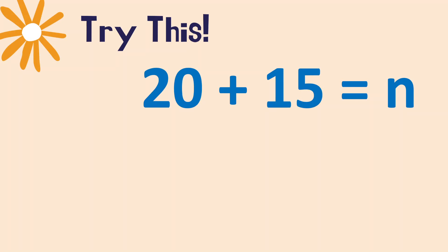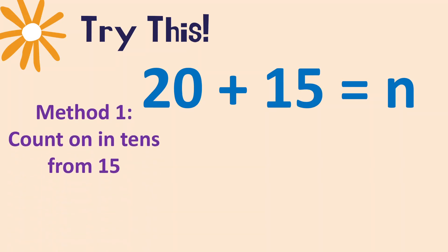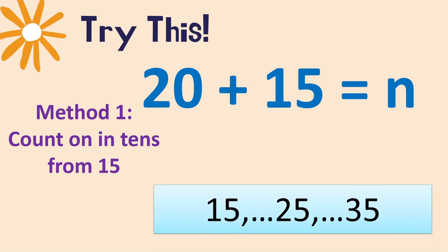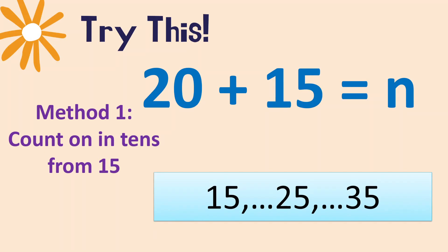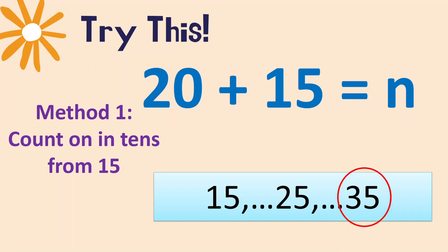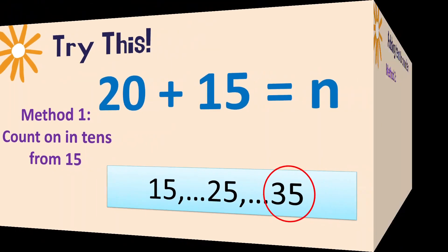Let's try 20 plus 15. Using counting on in tens starting from 15 — how many times? Two. So: 15, then 25 (first ten), then 35 (second ten). So the answer is 35. Very good!